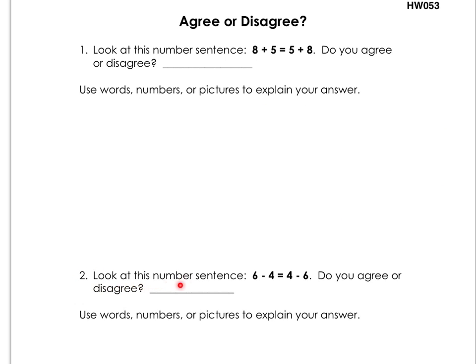Number two, it says look at this number sentence. 6 minus 4 equals 4 minus 6. Do you agree or disagree? So, again, you either have to write the word agree or disagree. And it has to be whether you think the statement is true or not. Is 6 minus 4 equal to 4 minus 6?